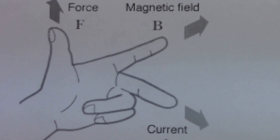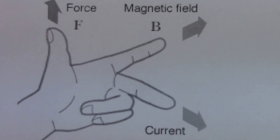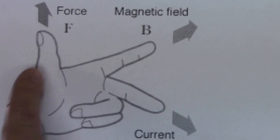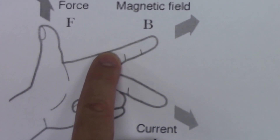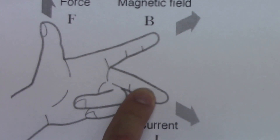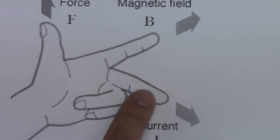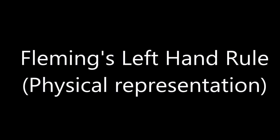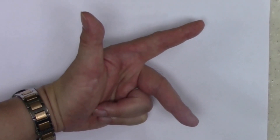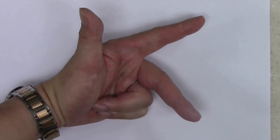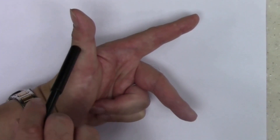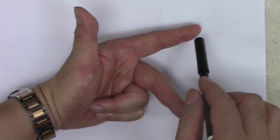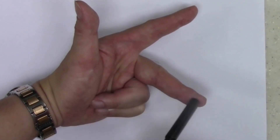The third terminology is the Fleming left-hand rule. The thumb represents the direction of the force, the index finger the direction of the magnetic field, and the middle finger the direction of the current. Now we will show how the Fleming left-hand rule looks like using an actual left hand. The thumb points to the direction of the force, the index finger points to the direction of the magnetic field, and the middle finger points to the direction of the current.